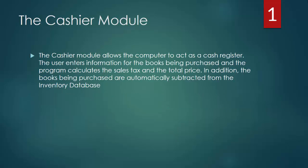The cashier module allows the computer to act as a cash register. The user enters information for the books being purchased and the program calculates the sales tax and the total price. In addition, the books being purchased are automatically subtracted from the inventory database. So we will know how much profit we made from a book, and we will also update our inventory when a book is purchased.